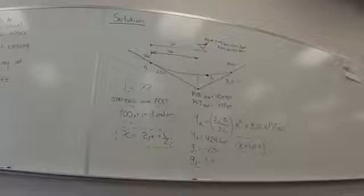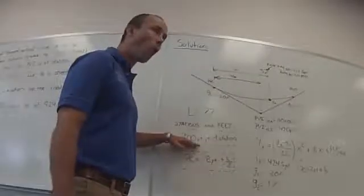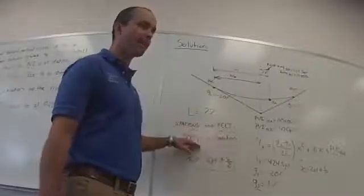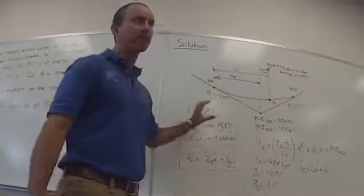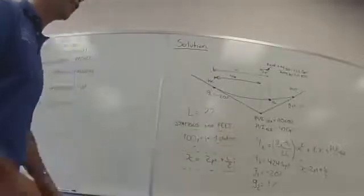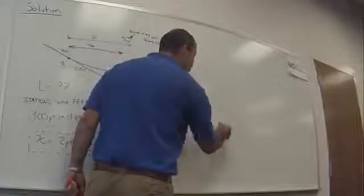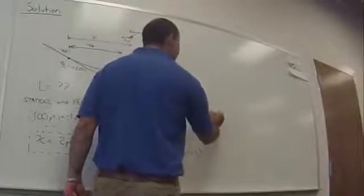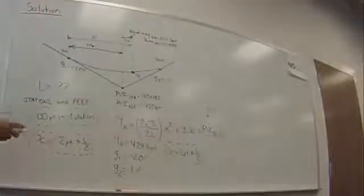So we're looking for L stations and as well as L in feet. You can choose either to work in a station or in feet. Either or. You can't just choose to go in feet and then go into stations or choose the stations and go into feet. So now, PVC elevation. How we calculate PVC elevation in terms of L? Because I don't know L.